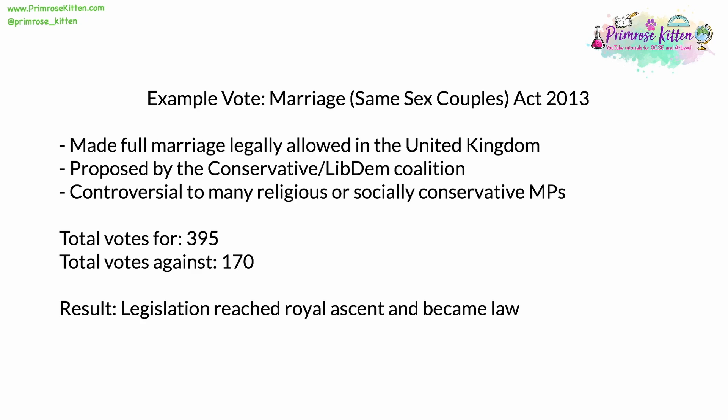Taking an example piece of legislation: the Marriage (Same Sex Couples) Act 2013 made full marriage legally allowed in the United Kingdom between same-sex couples. It was proposed by the Conservative-Liberal Democrat Coalition, which came to power following the hung parliament election of 2010. This legislation was controversial to many religious or socially conservative MPs — those who believe in traditional gender and sexuality roles. Although many Conservative MPs voted against the act, most of the Labour benches, Liberal Democrats, SNP, Plaid Cymru and Greens voted for it, giving a total of 395 votes for and 170 votes against.